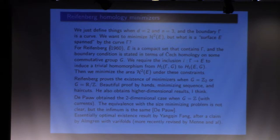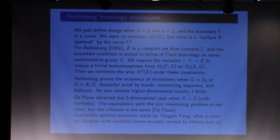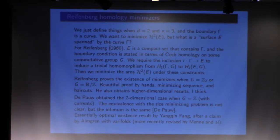The last one: since today is the day of Reifenberg, the Reifenberg homology minimizer. This is a very nice way of setting the boundary story — it's not differential geometry anymore, we're talking about sets, with a little bit of algebraic topology. This is the definition of a set being bounded by a curve, by Reifenberg. Unfortunately, you have to work with Čech homology groups and not singular homology, because this homology goes to the limit better.